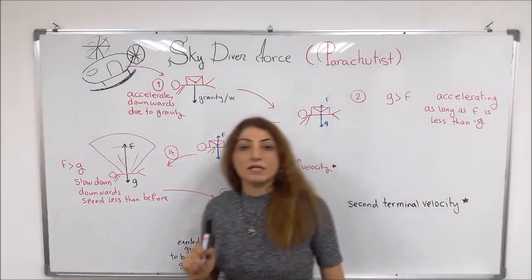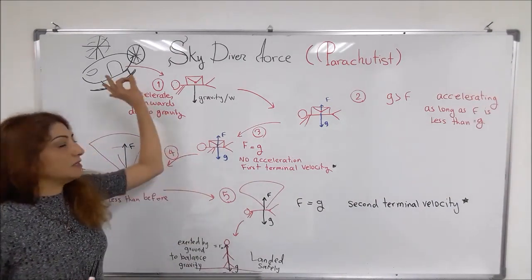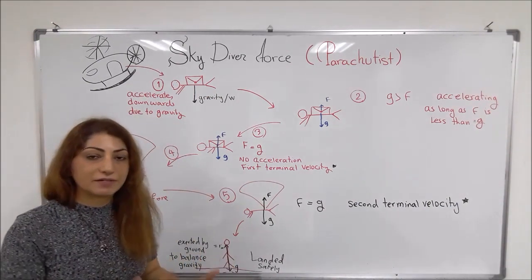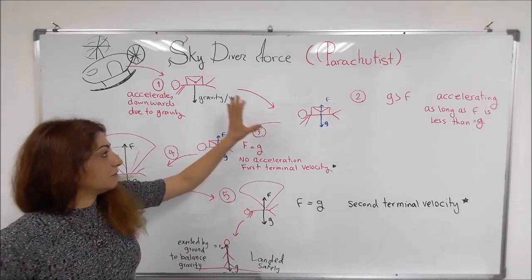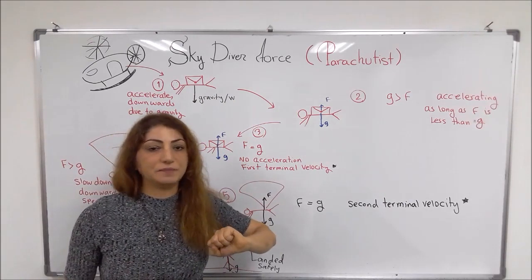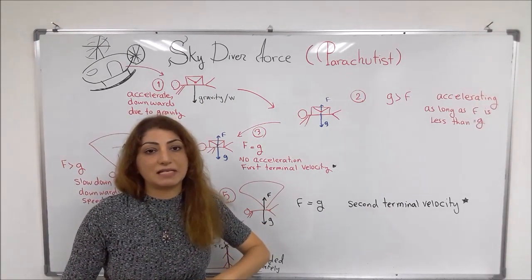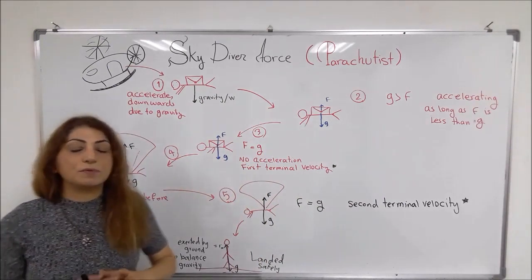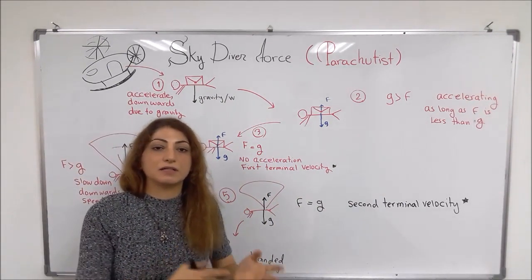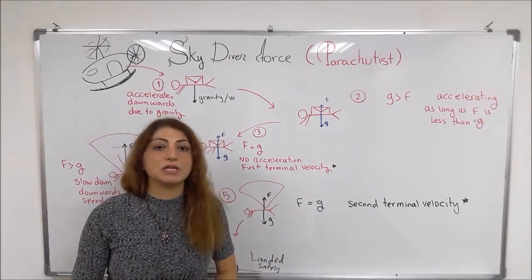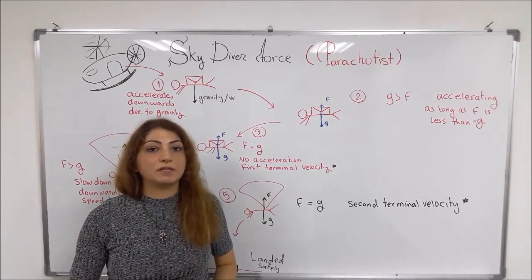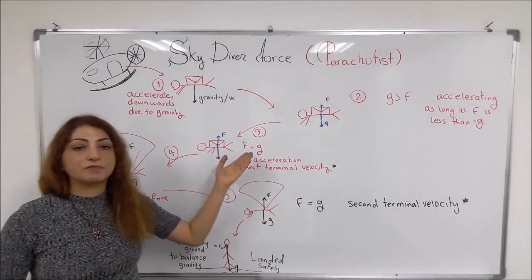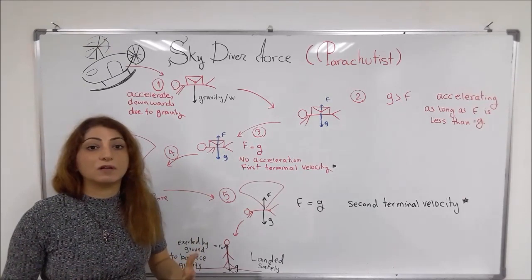To summarize: when the person jumps at the beginning, there is only one force acting — the force of weight or gravity — and the person accelerates downward until the air friction force forms and its size becomes the same as the force of gravity. At that point, there is no more acceleration. The person is still going downward but with constant speed. Here we have the first terminal velocity — when friction and gravity become equal, we have terminal velocity.